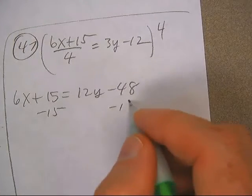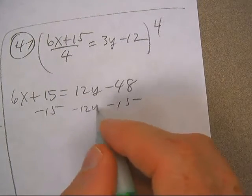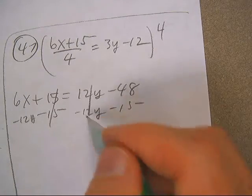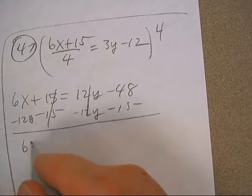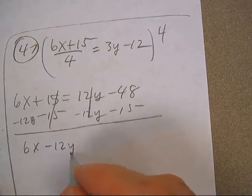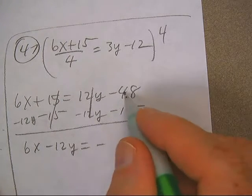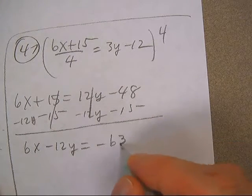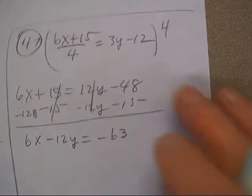Let's subtract 15. Let's subtract 12y. That makes those go away. 6x minus 12y equals negative 63, like that.